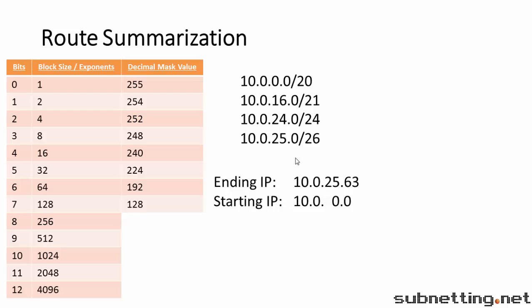Now we find the first octet which is different, which is the third octet. We subtract the starting IP from the ending IP and we get 25. Now we find the lowest power of 2 which is greater than 25, and that's 32. Our decimal mask value for the third octet is 224. That means our subnet mask is 255.255.224.0, or in shorthand slash 19. So our subnet mask is slash 19. That's our answer.